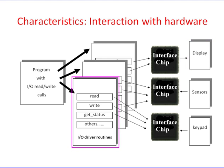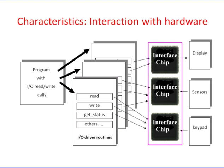These peripheral interface chips have addressable locations for reading, writing, control, status, and data. Interface chips may generate interrupts for the processor, indicating that certain operations have taken place or that an error condition has arisen.